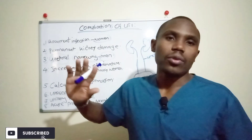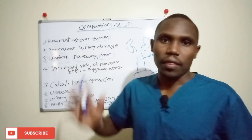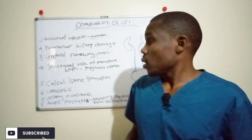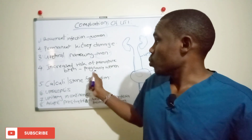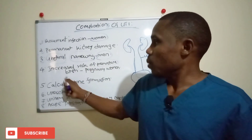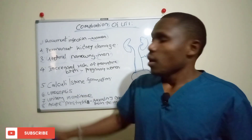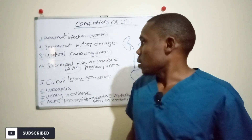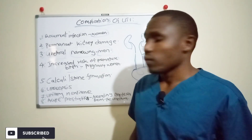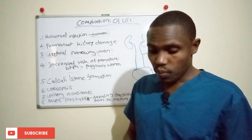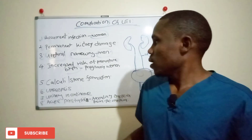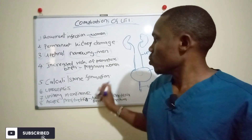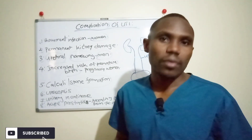Another complication is an increased risk of premature birth, especially in pregnant women. Untreated urinary tract infections can lead to premature birth and even low birth weight in the baby because of the bacteria.